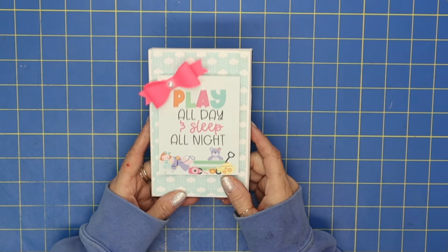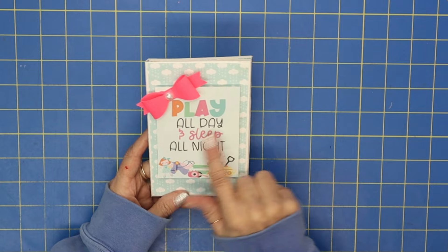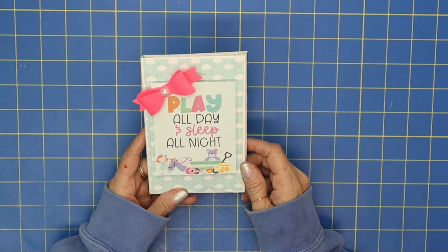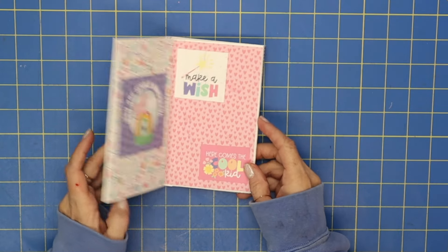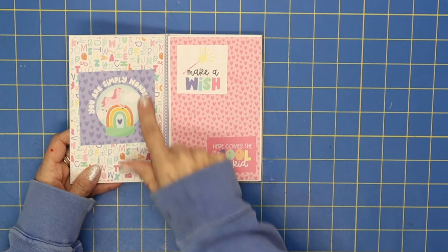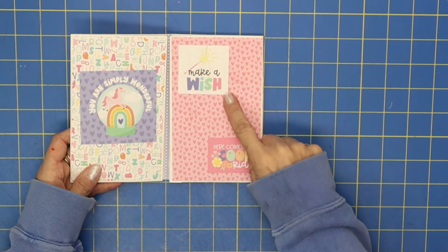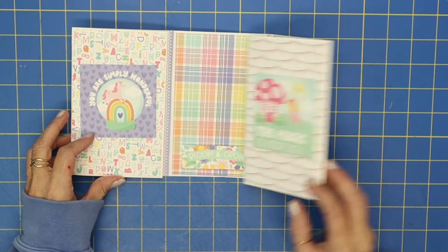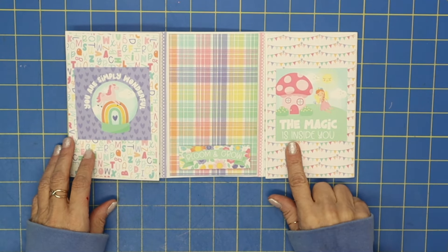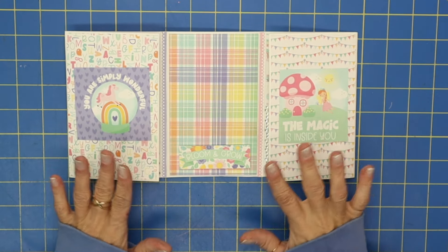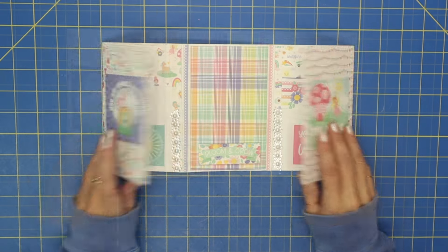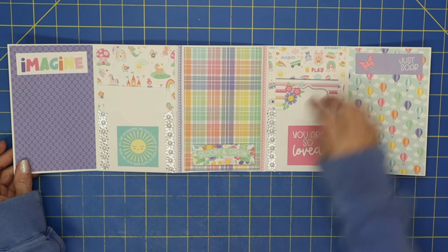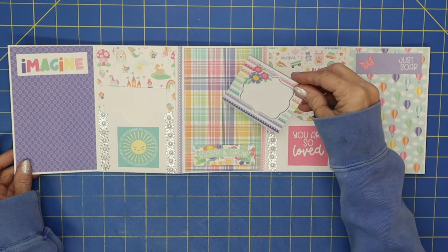Of course I've got my bow with a little pearl and it says 'Play all day and sleep all night,' look isn't that just precious. This opens up, you've got 'You are simply wonderful,' 'Make a wish,' and 'Here comes the cool kid.' And then this opens up over here—you've got 'The magic is inside of you,' don't you just love all these sayings.